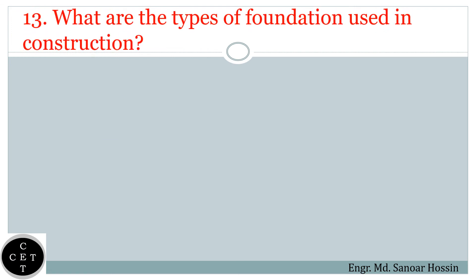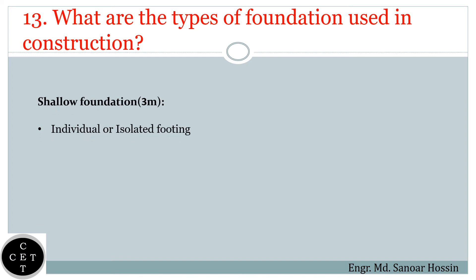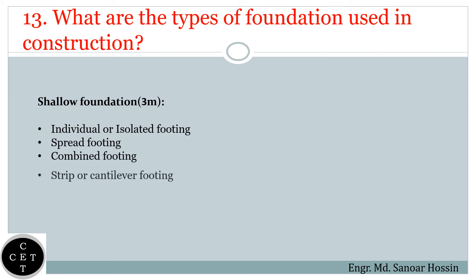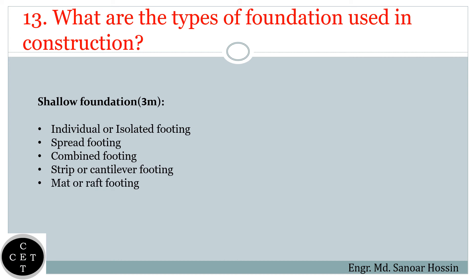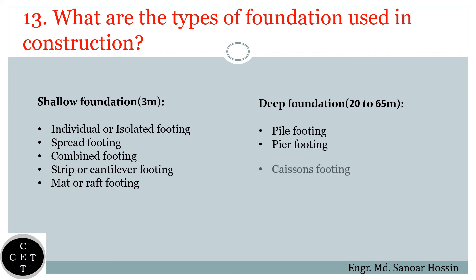Question number thirteen: What are the types of foundation used in construction? Shallow foundation: individual or isolated footing, spread footing, combined footing, strip or cantilever footing, mat or raft footing. Deep foundation: pile footing, pier footing, caisson's footing, and well foundation.